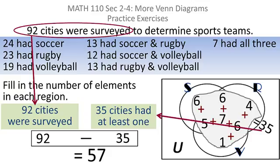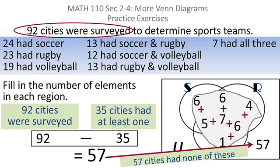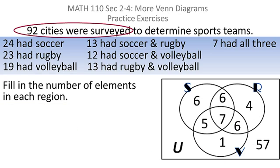Those are the cities that don't have any of those three team sports. And so that goes outside of all three circles, and that gives me a complete listing of all the element numbers in each region.